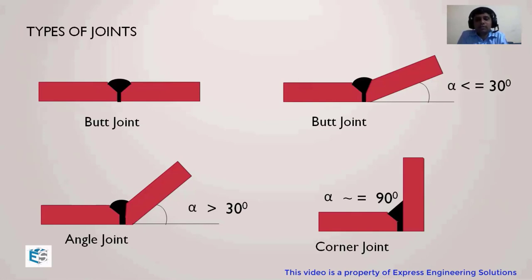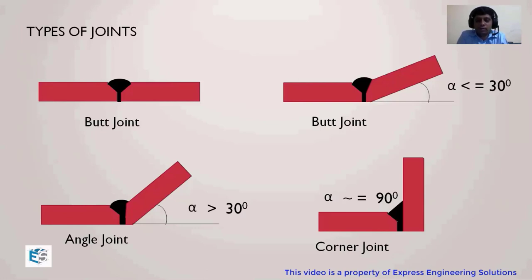Henceforth, if someone asks you about two intersecting plates with an angle of 25 degrees and argues it is an angle joint rather than a butt joint, you can simply open the code, go to the definitions, and read them. After this, there won't be any confusion. Having this knowledge will always give us an upper hand.